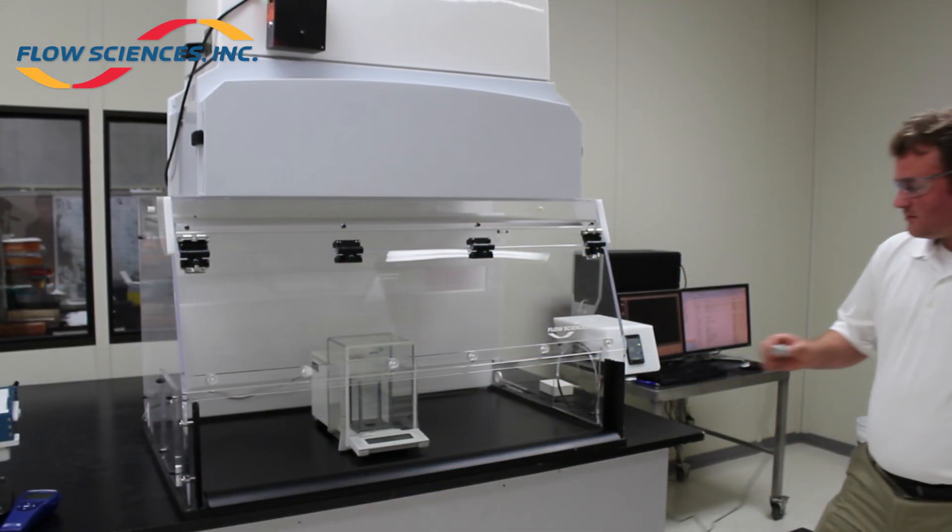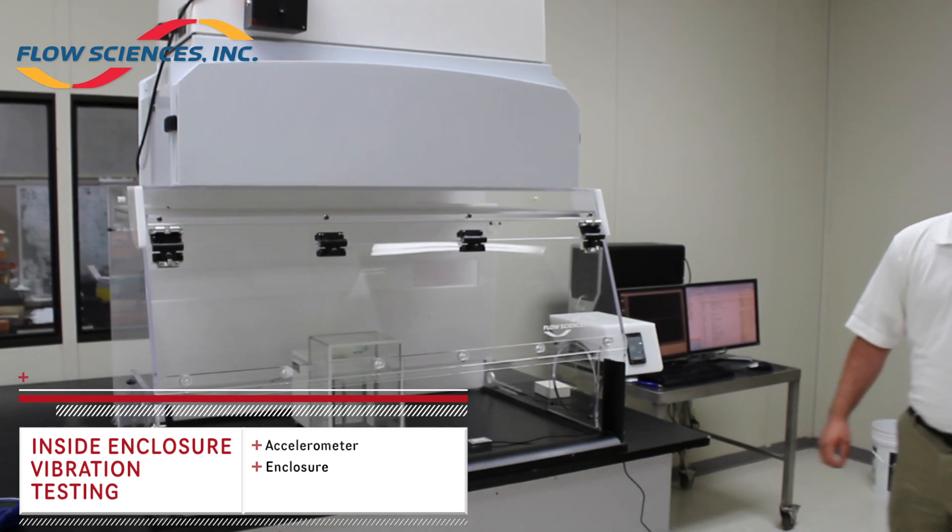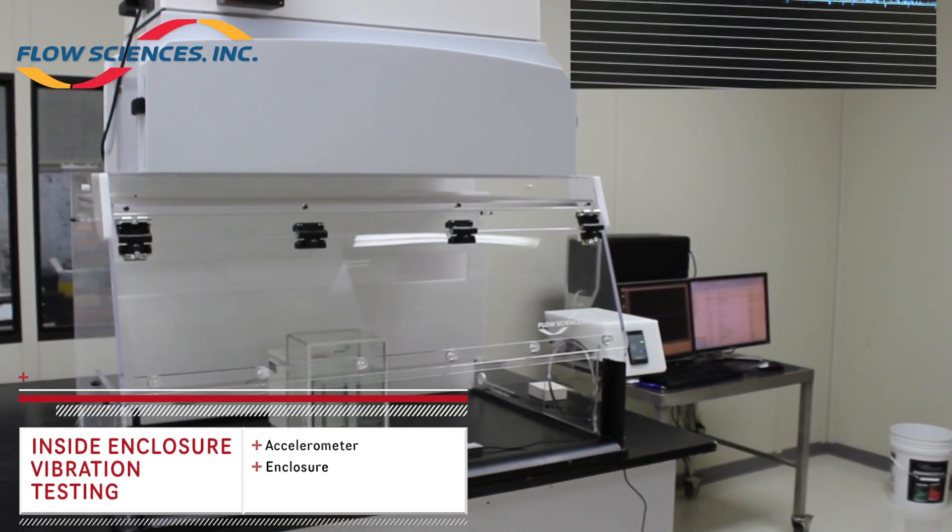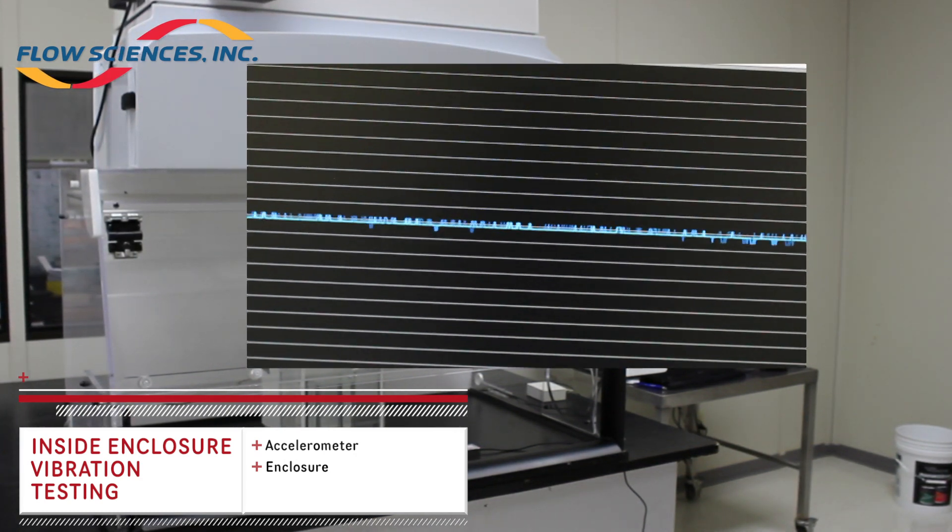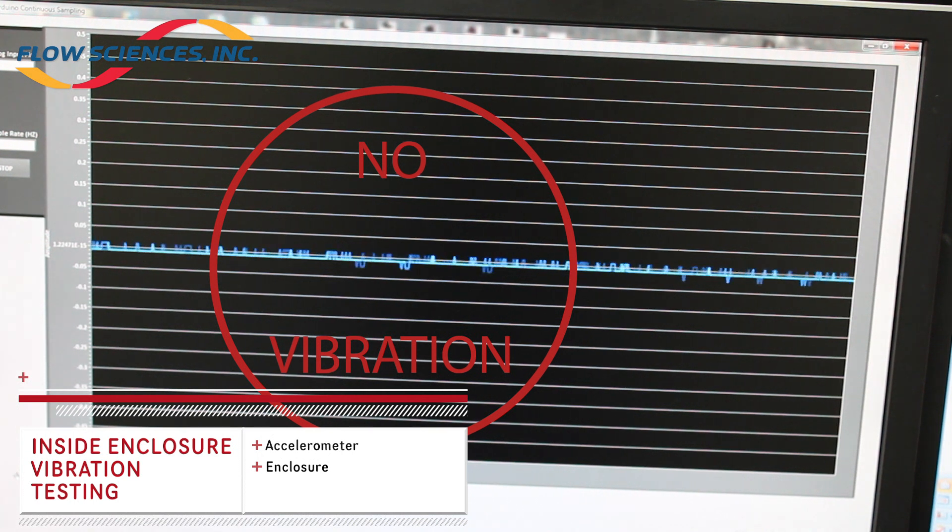Test 5: The fan still operating at a standard velocity. The sensor was placed inside the enclosure centered on the phenolic work surface. This was to determine what vibrations travel through the enclosure from the fan unit directly onto the work surface.